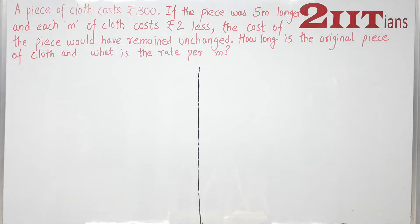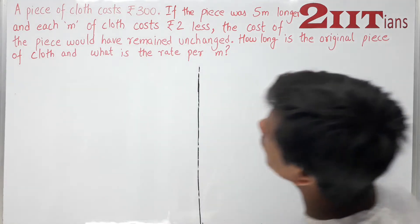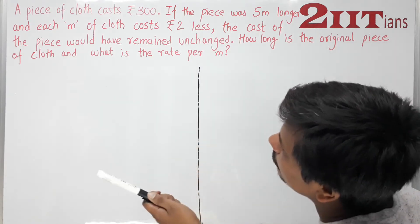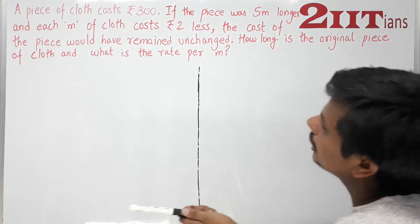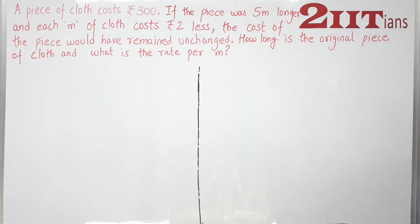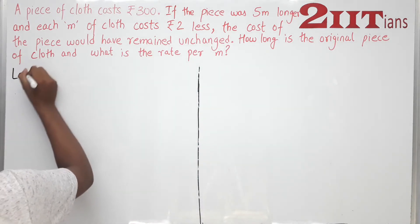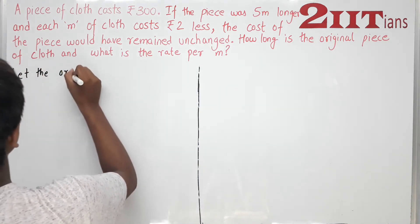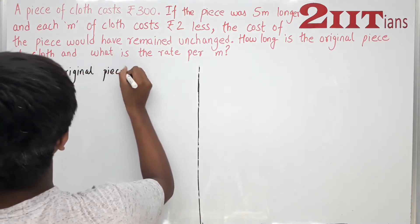A piece of cloth costs Rs. 300. If the piece was 5 meters longer and each meter of cloth costs Rs. 2 less, the cost of the piece would have remained unchanged. How long is the original piece of cloth and what is the rate per meter?